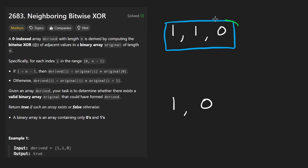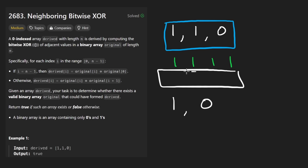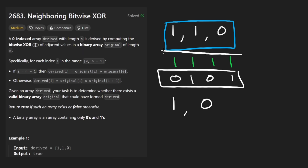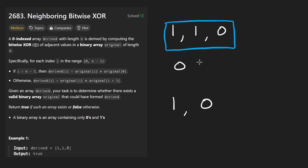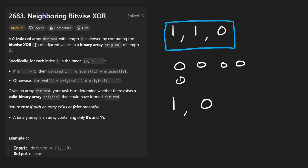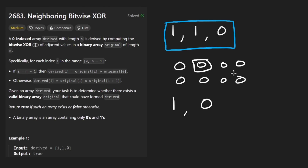For example, if we had a derived array of just a bunch of ones, that tells us that the original array must have had differing bits for each pair — so maybe zero and one, then one and zero. To recreate something like this you would just create an alternating array. Given a derived array of a bunch of zeros, that would tell us all adjacent pairs must have been the same — so maybe all ones or all zeros, since each zero tells us those two are the same.